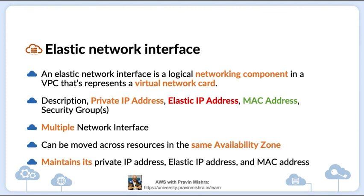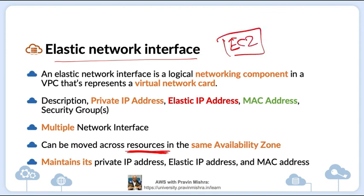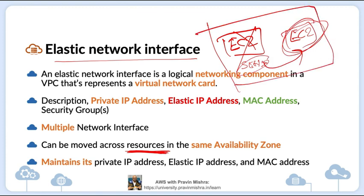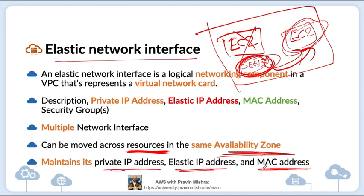Another important point: we can move an Elastic Network Interface across different AWS resources. For example, if you have a secondary ENI attached to an EC2 instance and that instance goes down, you can create another EC2 instance and move that network interface to it — but only if they are in the same Availability Zone. When you move the network interface to another resource, it also moves its private IP address, Elastic IP address, and MAC address.